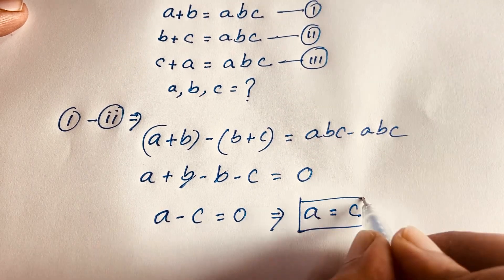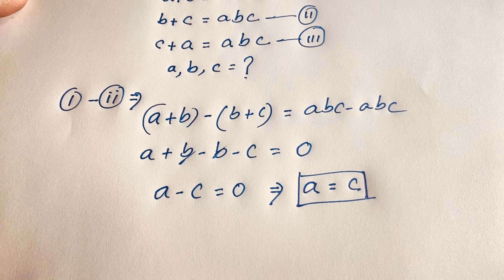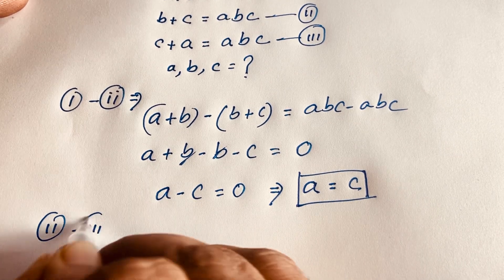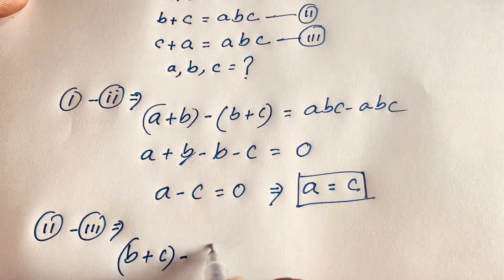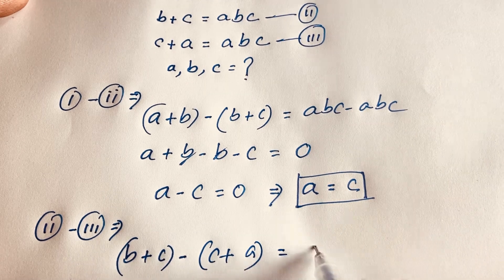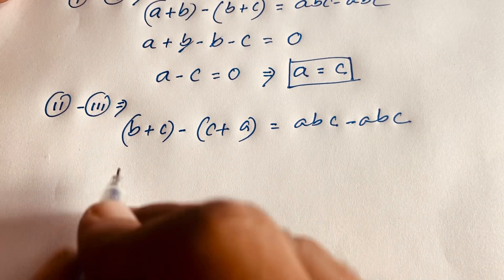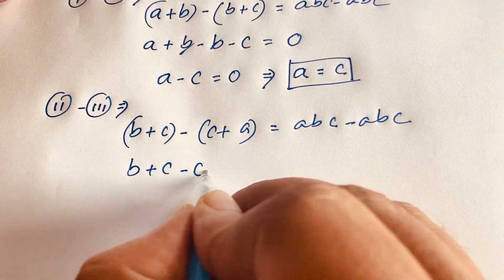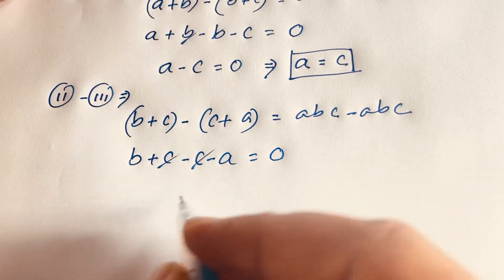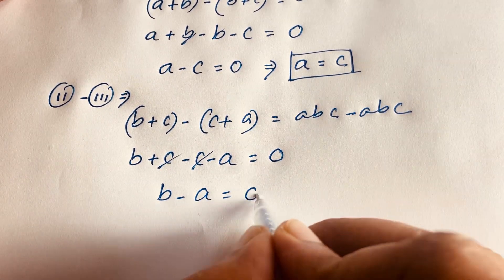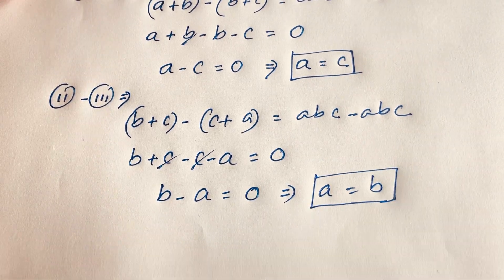So we find here that a is equal to c. Then if I subtract the second equation and the third equation, I get: (b plus c) minus (c plus a) is equal to abc minus abc. This gives b plus c minus c minus a is equal to 0. The c's cancel and we find b minus a is equal to 0, so a is equal to b.